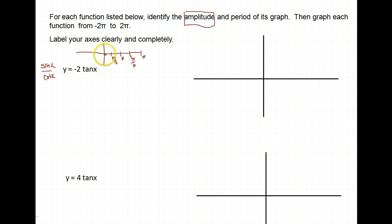So tangent looks like this. It has asymptotes at π/2, 3π/2, and every π/2 after that, so also at negative π/2, there's our negative π, negative 3π/2, there would be another negative 2π.